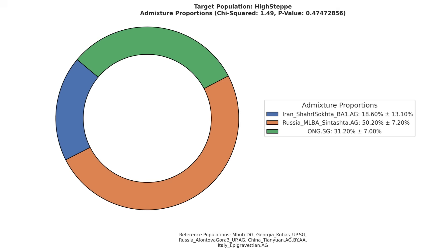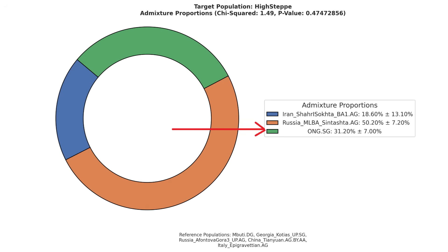This model shows the ancestry breakdown for the highest steppe individual. He is modeled as 50% steppe, 19% Iranian Neolithic farmer, and 31% Ancient Ancestral South Indian.